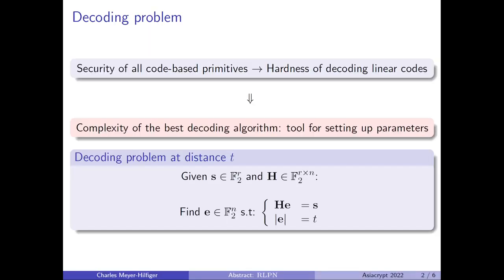The security of all code-based primitives relies on the hardness of decoding linear codes. Thus, the complexity of the best decoding algorithm is an essential tool for setting up parameters of such primitives. Formally, the decoding problem at distance t can be stated as follows.